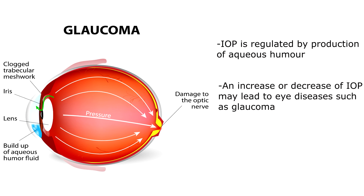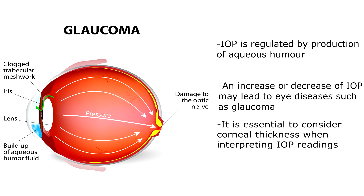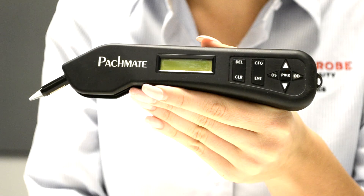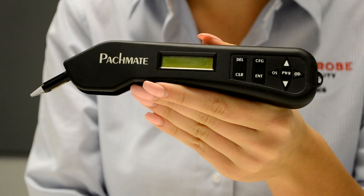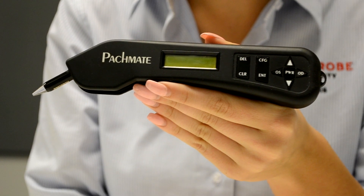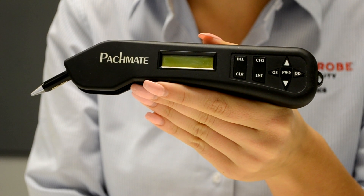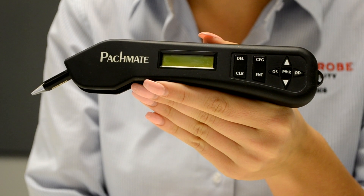IOP readings are linked to corneal thickness and thus interpretation of IOP readings may vary. Therefore it is important to measure a patient's corneal thickness, which can be done through an instrument called a pachymeter. Pachymetry readings can be taken before or after IOP readings as research has shown there is no variation in measurements. There are many brands and types of pachymeters, however for the purposes of this video we will be using and discussing the settings of the pachymeter brand TACMATE DGH55.